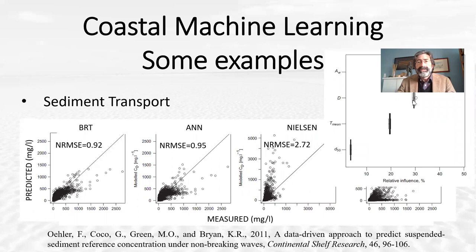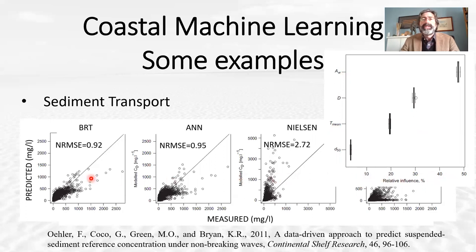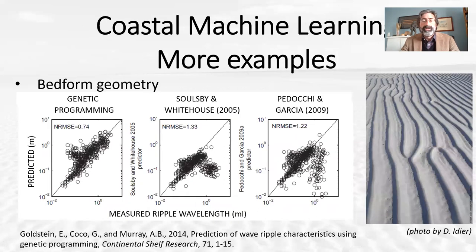Of interest is also that since we used only a limited number of variables — orbital diameter, water depth, mean period, and grain size — we can actually infer which parameter is more important when developing the predictor using machine learning. So some insight can sometimes be extracted, although I acknowledge it is very basic at the moment.